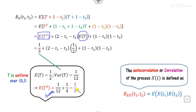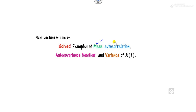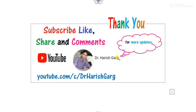After calculation, we obtain the required answer for this correlation. This is the way to solve random process problems. We will solve more examples related to mean, covariance, and autocovariance in the next class. Till then, please like, share, and subscribe to this channel for more updated videos.